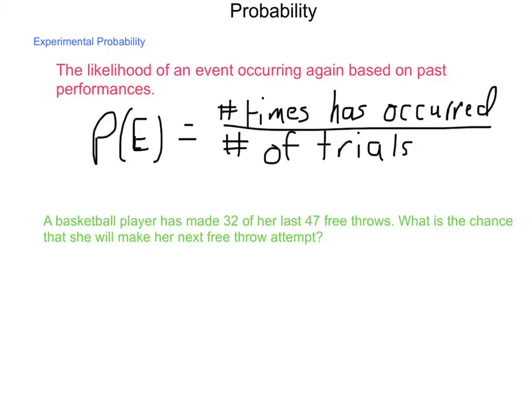What we need to do is say probability of goal, because that's what will happen if she makes the shot, she will score a goal. This equals the number of times that she has succeeded. That's 32 divided by the number of trials that she's had, and so far she's had 47.